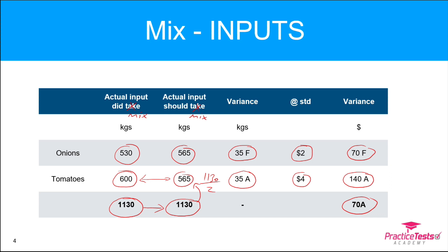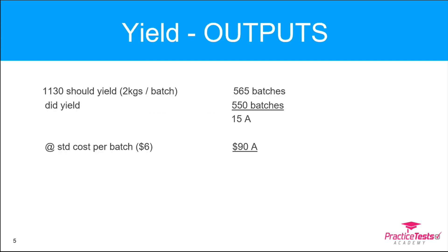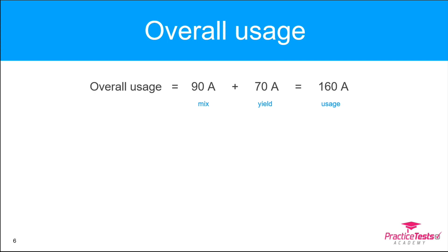Now for yield — this is about what came out given what went in. The standard cost card said we needed two kilos of materials to produce one batch. Given that 1,130 kilos went in, we would have expected that to produce 565 batches. What it did yield was 550 batches — 15 batches fewer than expected. We value that at the standard cost of a batch ($6), so 15 × $6 gives us an adverse yield variance of $90.